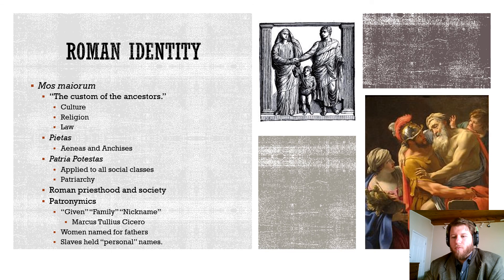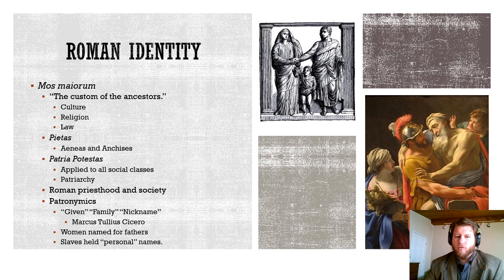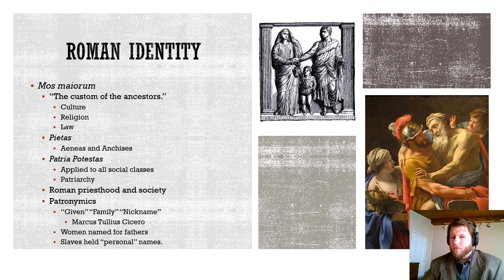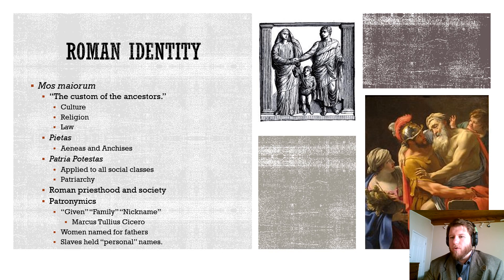Then we have patronymics — the male element of naming. Roman names are often in three parts, though they can extend further. Most famous people we'd discuss have three names. For example, we'd call him Caesar, or even Julius Caesar, but his full name is Gaius Julius Caesar. Cicero, the famous orator, is Marcus Tullius Cicero. Marcus is his given name — his parents gave him that. Tullius is his family name, so he's a member of the Tullii. And Cicero is a nickname — it actually means 'chickpea.'